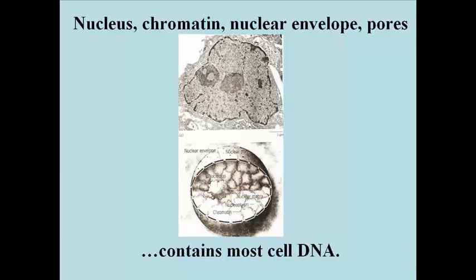The nucleus itself contains chromatin, DNA bound to proteins. Chromatin is embedded in a nuclear matrix surrounded by nucleoplasm.